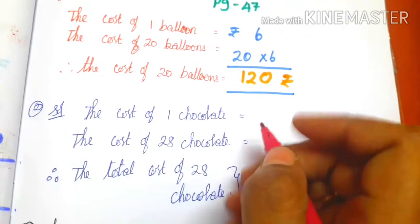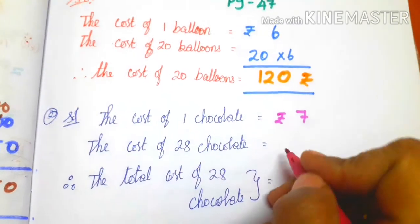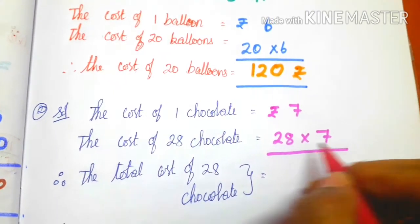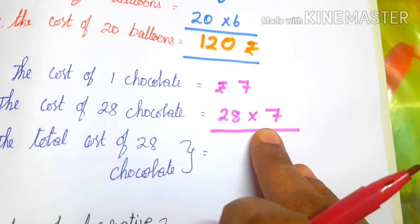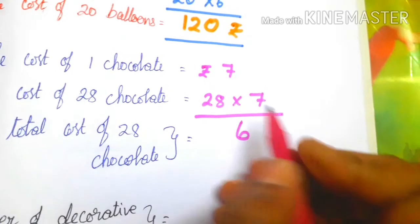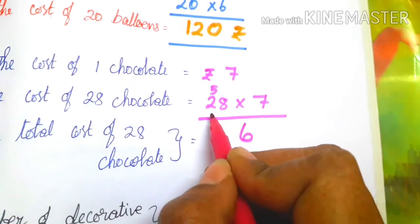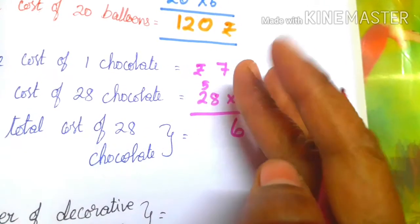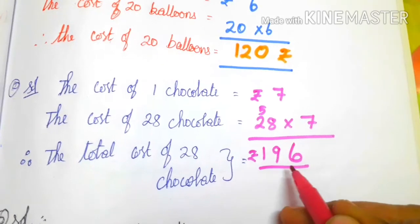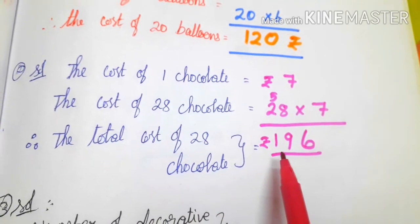The cost of 1 chocolate equals rupees 7. The cost of 28 chocolates equals 28 into 7. So multiply the numbers: 7 eights are 56, write 6 carry 5. 7 twos are 14, plus 5 is 19. The answer is rupees 196. Therefore the total cost of 28 chocolates equals rupees 196.